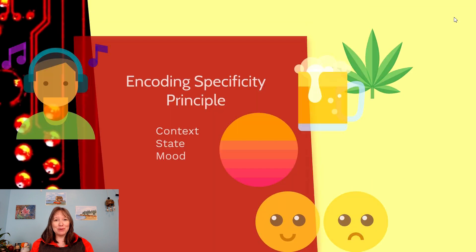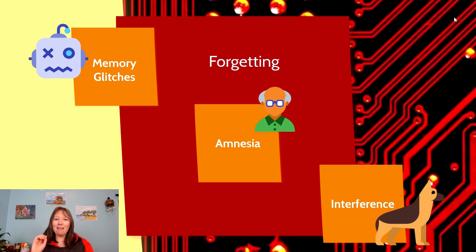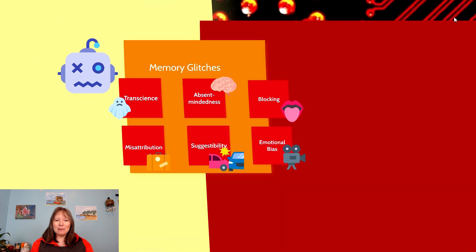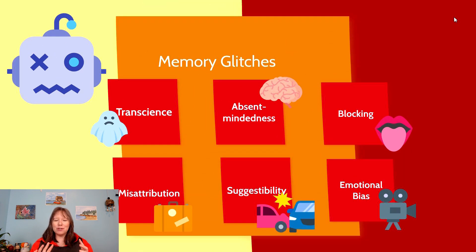Some of the most interesting retrieval research is actually when we are unable to retrieve things correctly. Forgetting is the notion that either we can't retrieve something or when we retrieve it, it looks a little different. We're going to start by talking about some popular memory glitches that many of us experience, then talk about amnesia, and then move into interference. Discussing memory glitches further helps us understand why our mind is not like a computer.